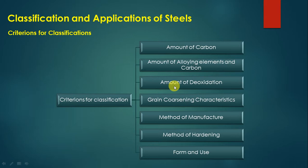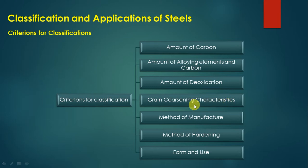The third criterion is the amount of deoxidation — whether it is a killed steel, semi-killed steel, or other types — which decides what type of steel is manufactured after processing. The fourth criterion is grain coarsening characteristics, assessed per ASTM numbers to determine grain structure arrangement.